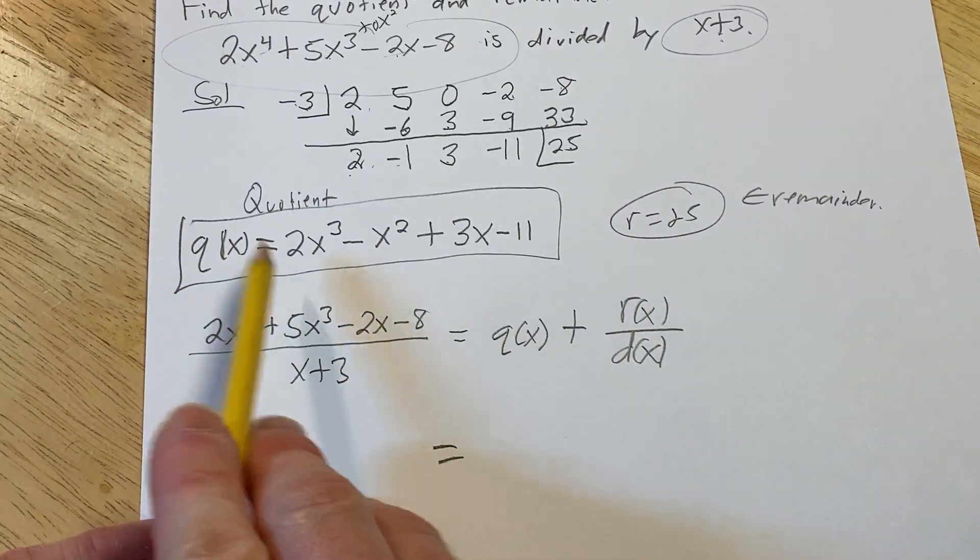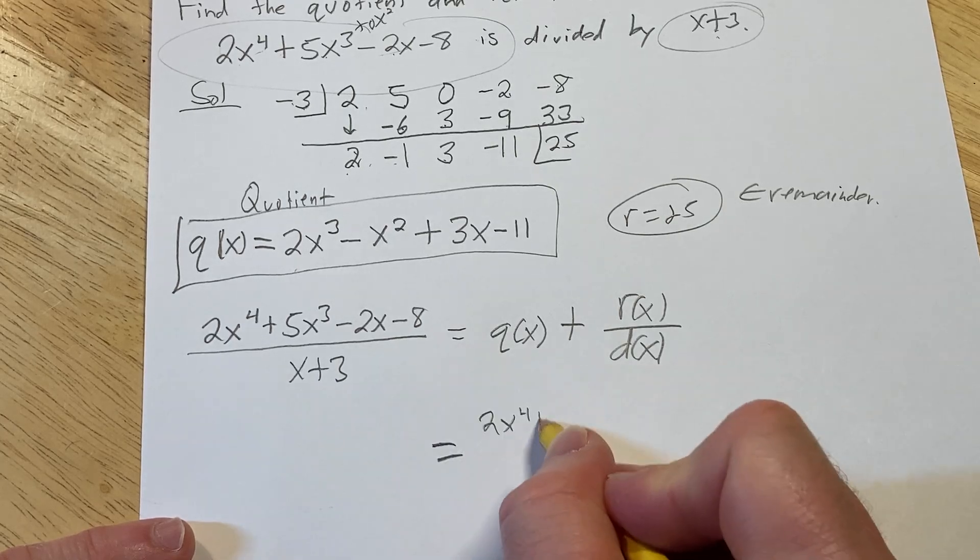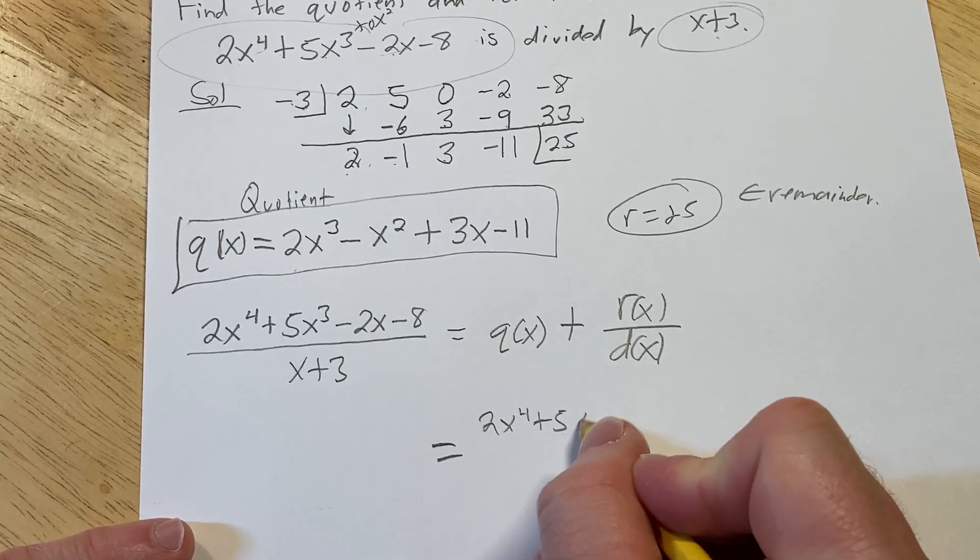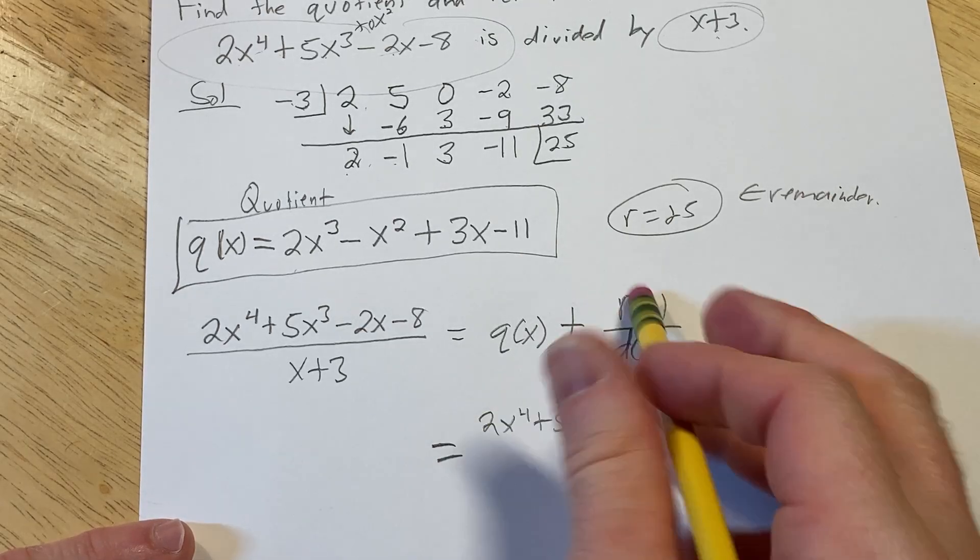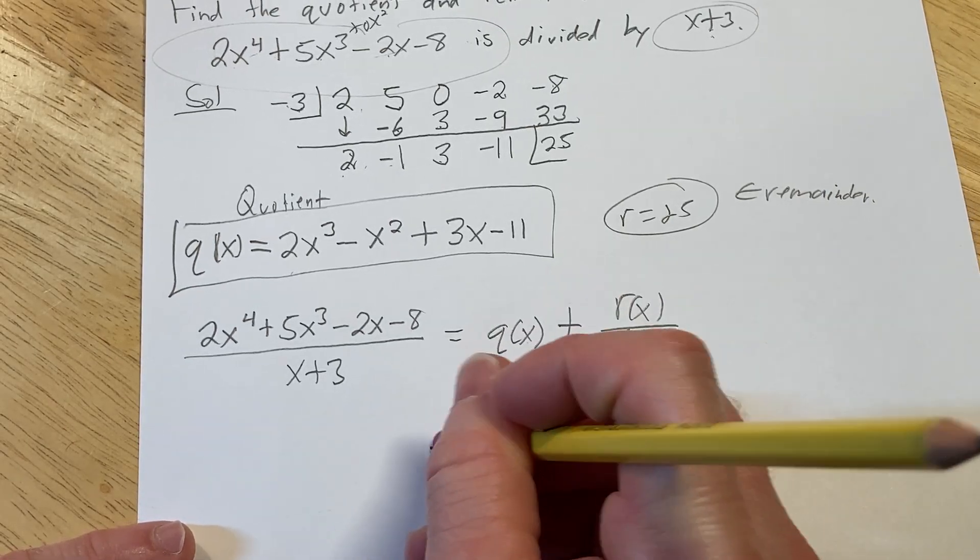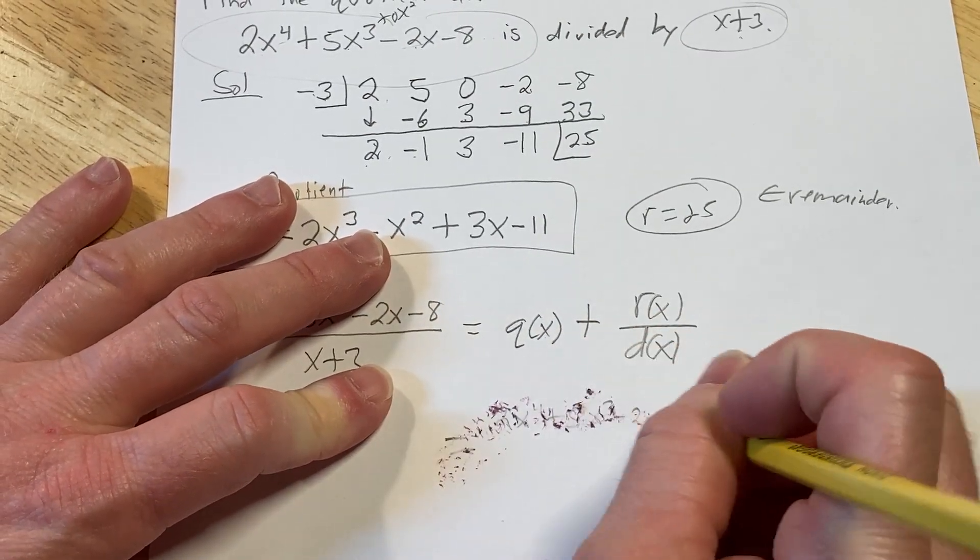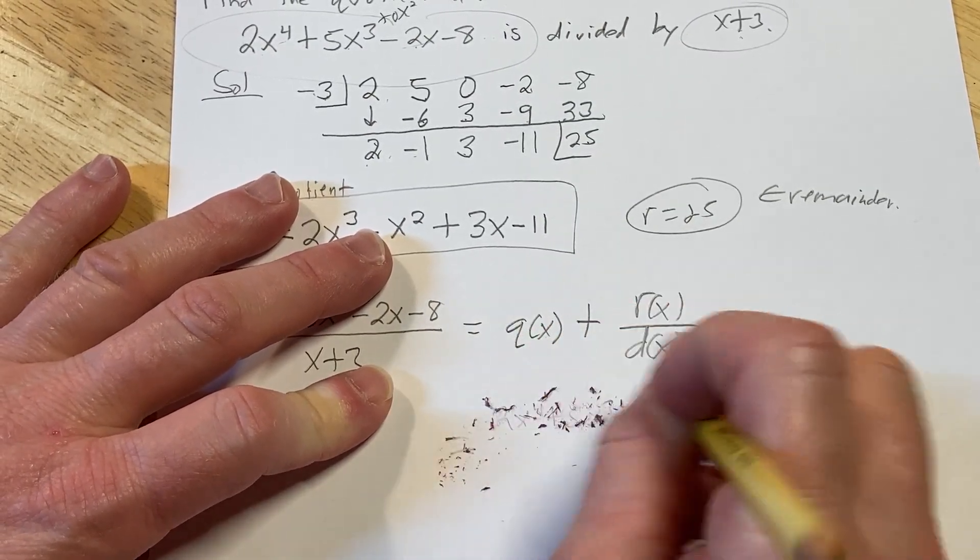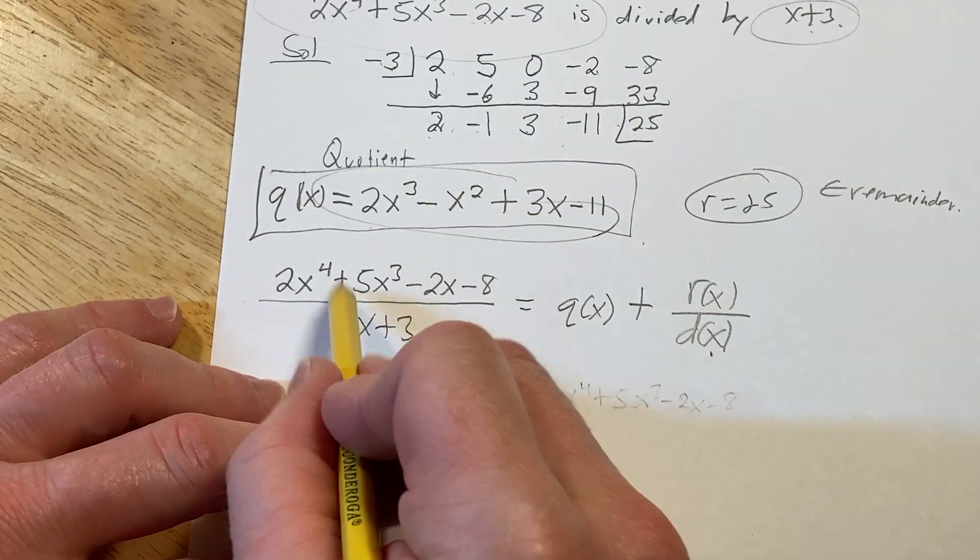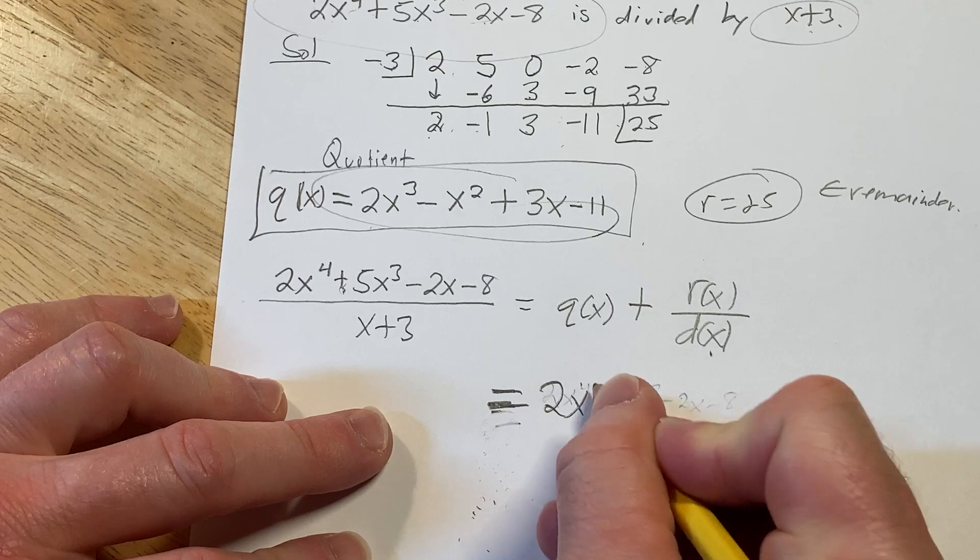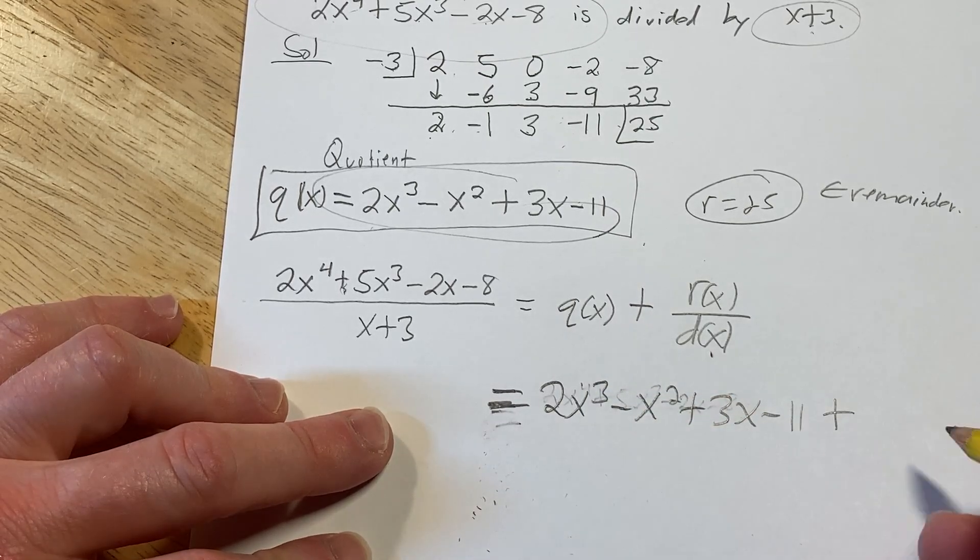So this is equal to q of x, which we already have. This is by the division algorithm. It shows that things exist and they're unique. I don't know why I wrote it so high up. I actually wrote down the wrong thing. Let me just fix that. So this is actually the quotient, which is right here.